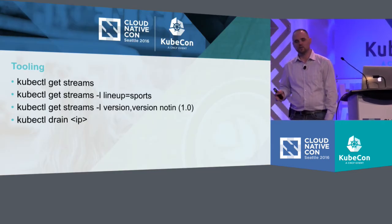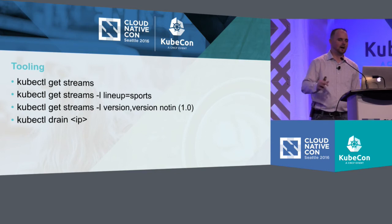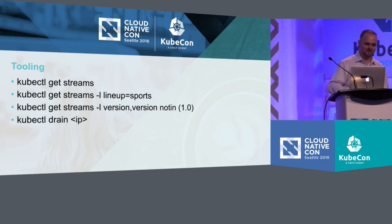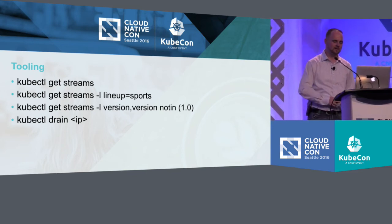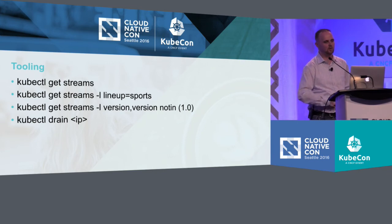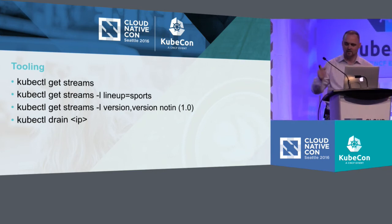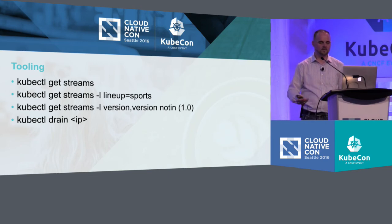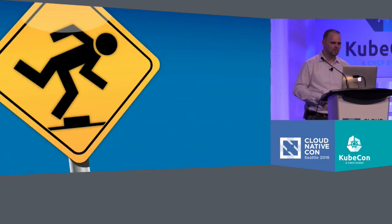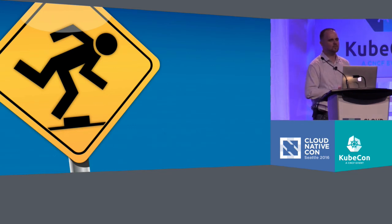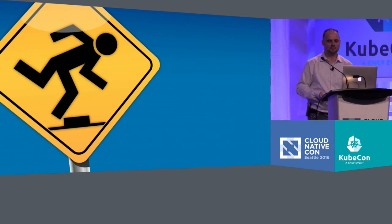We actually get a lot of free tooling too. We can use kubectl to get a list of streams, filter it down to figure out what hosts are running particular channel lineups, do a search to see what's running an outdated version of our multiplexer software, and drain hosts so we can take them down for maintenance. We're able to take a highly complex system with many constraints and turn it into a solution that's relatively simple and straightforward. And there's tremendous beauty in that — but it's not without its stumbling blocks either.